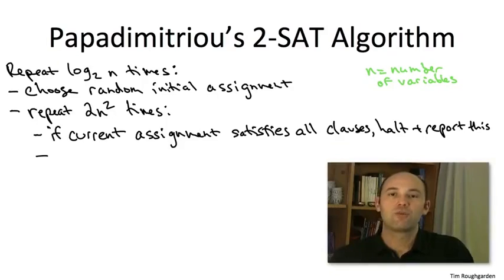So what do we do next? Well, next we do an iteration of local search. We try to improve our assignment. How do we do that? Well, we pick an unsatisfied clause. If there are many such clauses, we pick one arbitrarily. And we try to make amends with this clause by flipping the values of one of the variables in the clause.